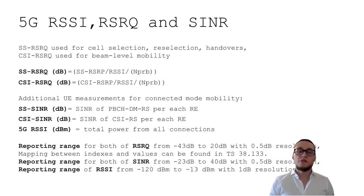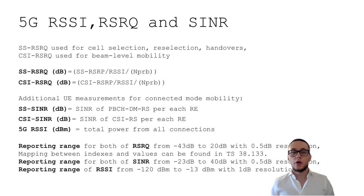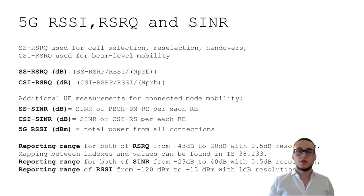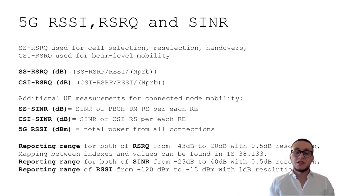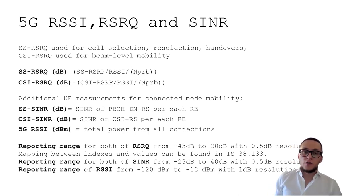Let's briefly talk about 5G RSSI, RSRQ, and SINR. There are two types of RSRQ: for SSB beams, used for cell selection, reselection, and handovers; and for CSI-RS beams, estimated for beam level mobility. RSRQ is basically the ratio of RSRP to RSSI per number of resource blocks. 5G RSSI is the total power for all connections across the whole bandwidth part. Additional measurements from the UE support connected mode mobility.